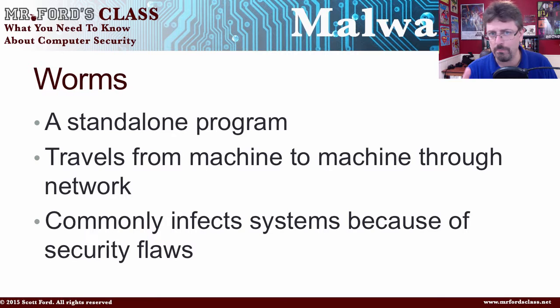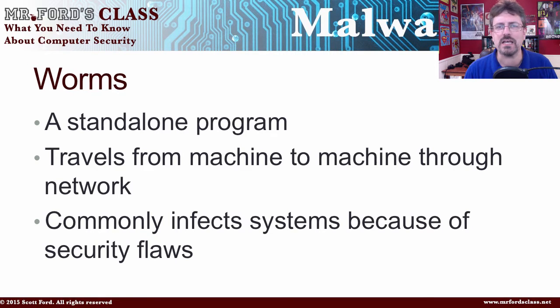It goes off by itself and travels from machine to machine via networks. Worms commonly affect systems because of security flaws. What winds up happening is somebody doesn't update their computer — and we'll talk about updating in this section on malware — and the worm has been designed to exploit that security flaw. We can see massive amounts of infections with worms.